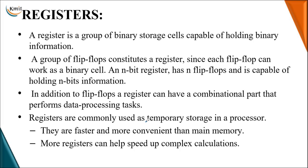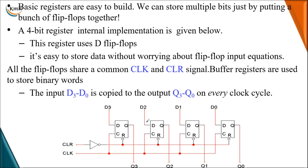Next, we look at basic register construction — how it is built with flip-flops and how it stores multiple bits. A bunch of flip-flops together form a register. To construct a 4-bit buffer register — where the output follows the input — we take four D flip-flops. The clear inputs and clock inputs of all flip-flops are connected commonly, making this register a synchronous sequential circuit since all flip-flops are clocked simultaneously.